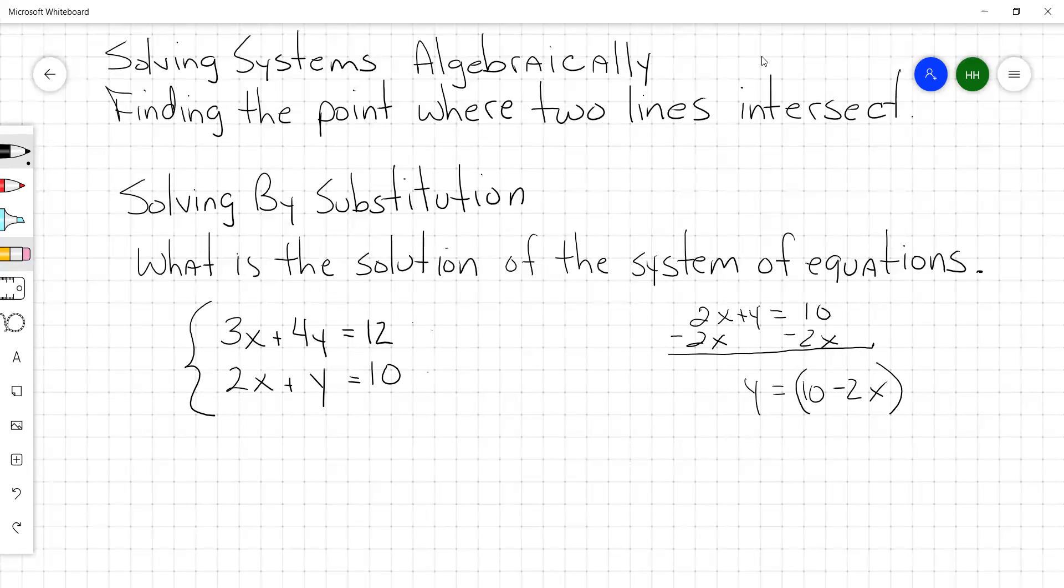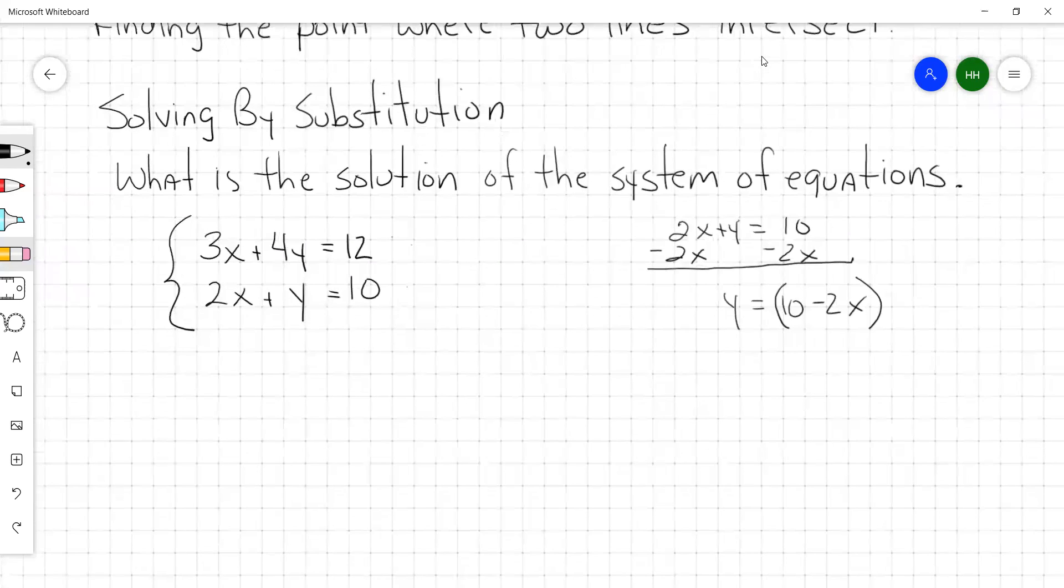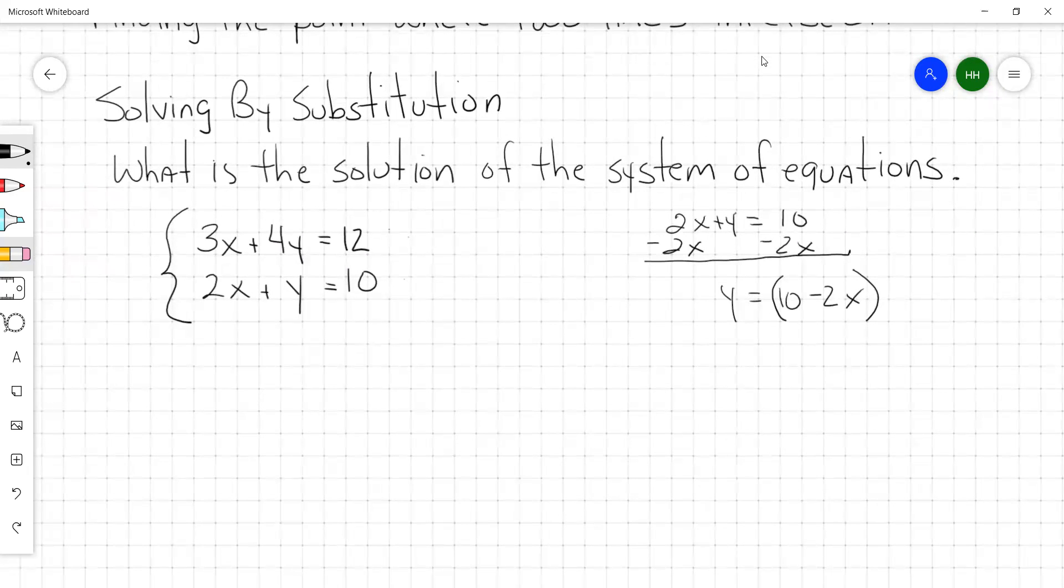Now I take this y that equals 10 minus 2x and I substitute it into this top equation. We're going to rewrite the top equation. I'm going to rewrite it as 3x plus 4 times whatever y is equal to. We got y that's equal to 10 minus 2x. So in parentheses, we take 10 minus 2x. We keep it equal to 12. Now we have an equation with only one variable. When you have an equation with just one variable, you can solve for it.